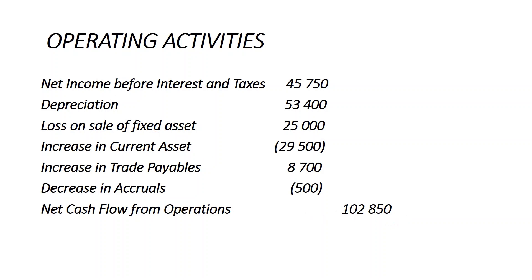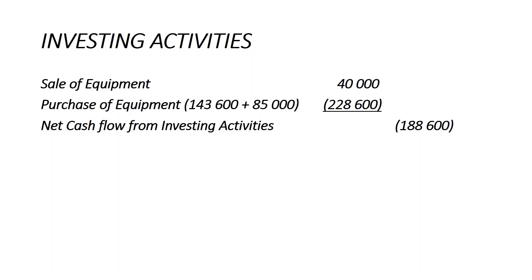Investing activities: proceeds from sale of equipment $40,000 inflow; purchase of equipment $(143,600) outflow; equipment introduced as capital $(85,000) outflow. Net cash outflow from investing activities: $(188,600).